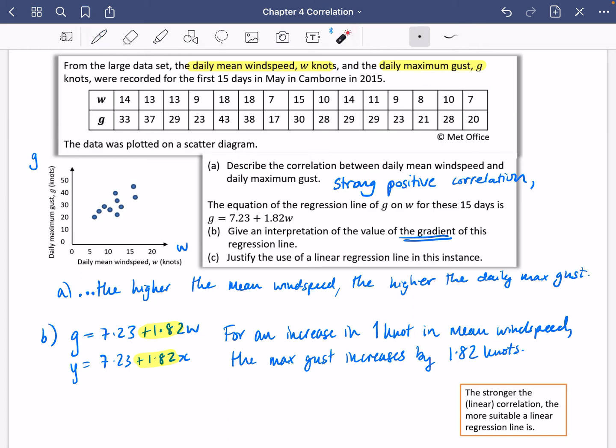And this part would be if there was a daily wind speed of zero, the maximum gust is 7.23. But that doesn't really make sense. Because if the daily mean speed is zero, how could there be a maximum gust? And we're going to talk about why that bit shouldn't be done, why we shouldn't make a prediction for something that's outside of the data range in just a second.